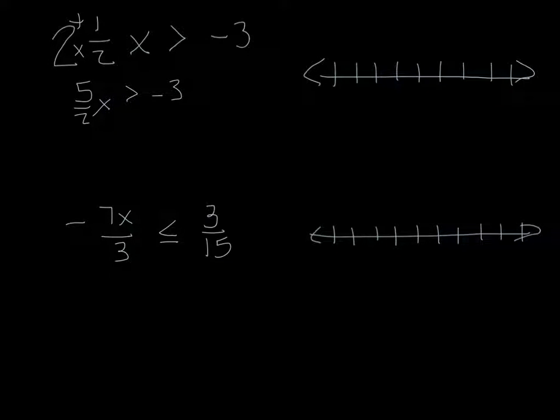And we never really divide by a fraction, so although I would technically want to divide by five halves, since we never divide by a fraction, we actually would multiply by its reciprocal. So this would become multiply both sides by two fifths, which is going to cancel out over here, so you've got an x greater than negative three times two fifths, which is going to give you negative six fifths.